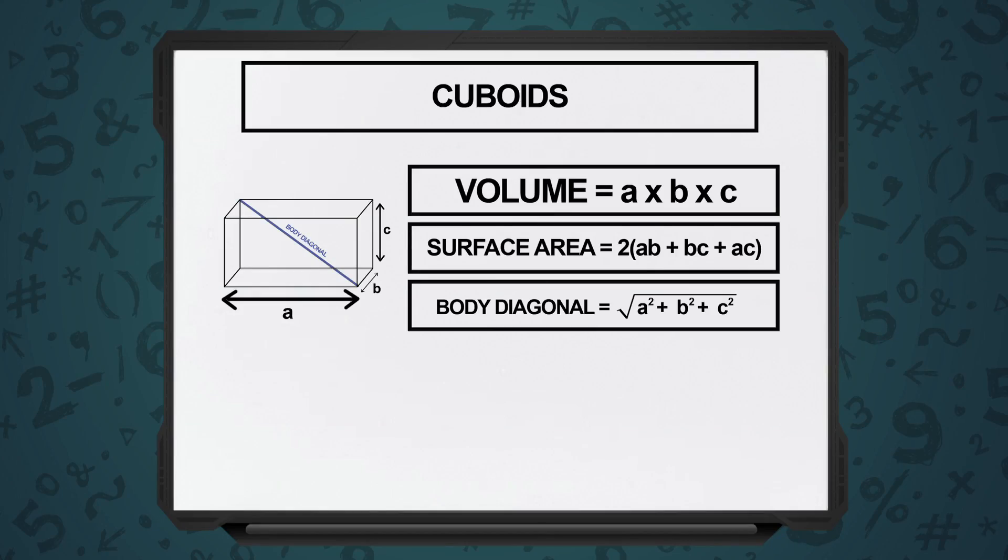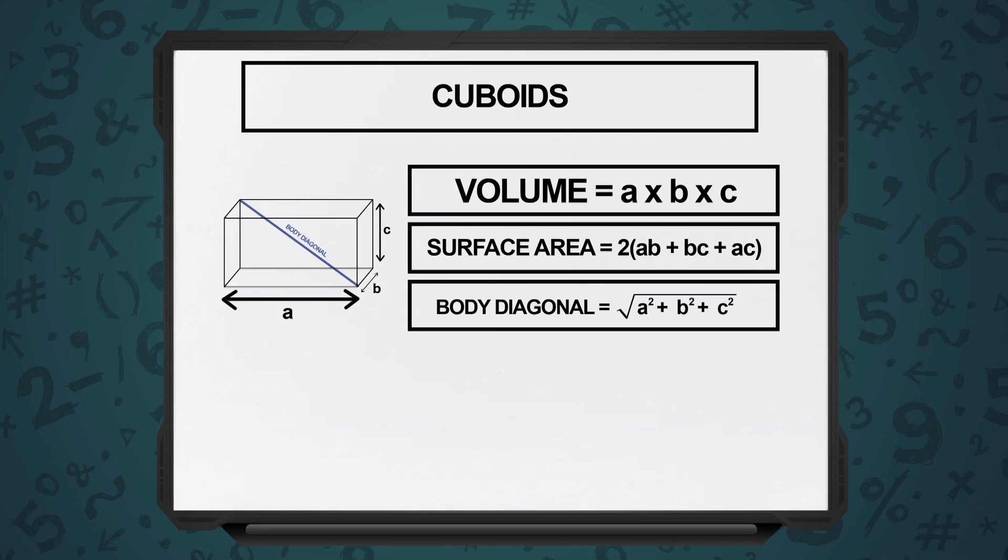In this case, the volume of a cuboid, if the length, breadth and height are A, B and C, the volume will be given by A into B into C, and the surface area will be nothing but the surface area of the 2 similar rectangles over here plus the 2 similar rectangles on top and bottom and likewise. So it is simply 2 open the bracket AB plus BC plus AC.